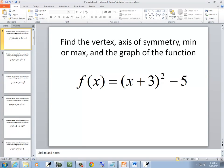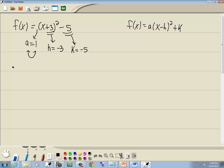Now the first thing they're asking for is find a vertex. If it's in standard form, your vertex is h, k, which we just said was negative 3, negative 5.